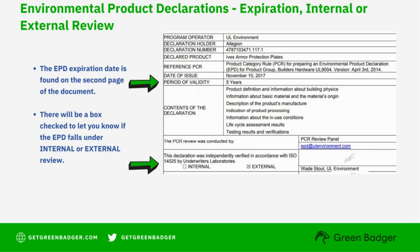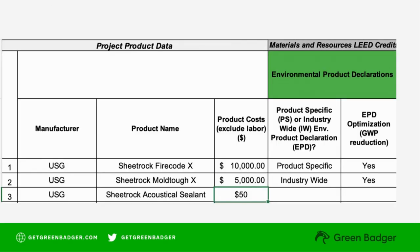The next step is just making sure the EPD is valid, and this information is usually on the first and second pages. Ensure that the certification date is within the time of construction. In this example, the EPD was issued in November 2017 and is valid for five years up to November 2022. There's also a section on the LEED cover sheet for you to note if the EPD has internal or external verification, and you can note if the product had an industry-wide or product-specific EPD.